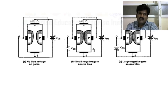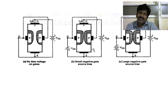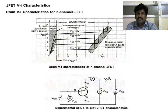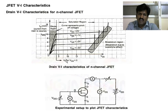This is the understanding of the JFET. The input is a voltage, but you are controlling the output current — that is what makes it a field effect transistor. Next, we will look at the VI characteristics of the JFET, specifically the drain VI characteristics of the N-channel JFET.